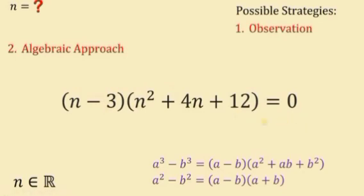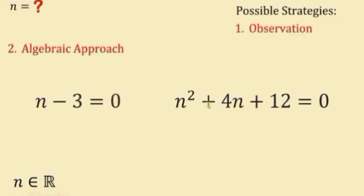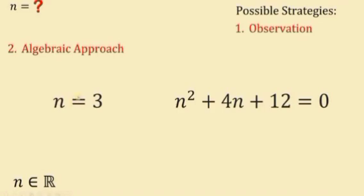Since the product equals zero, either n − 3 = 0 or n² + 4n + 12 = 0. From the first equation, adding 3 to both sides gives n = 3, which confirms the value we found by observation.